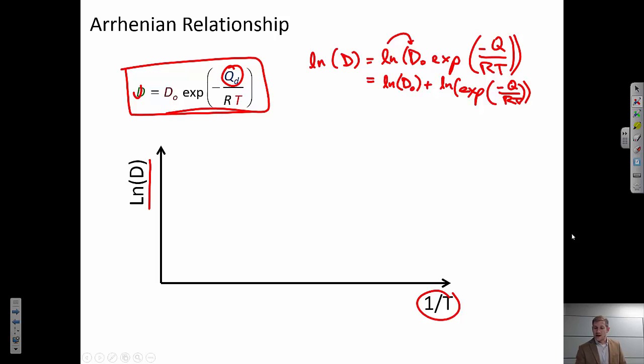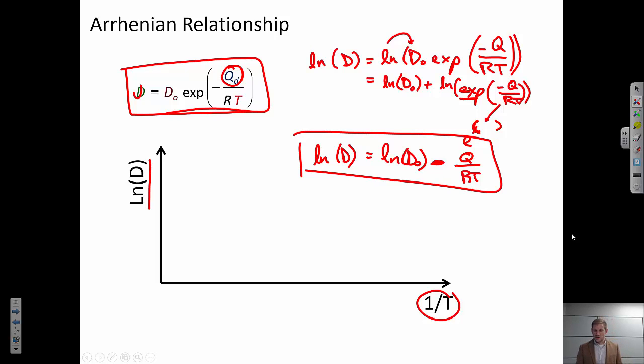If I'm taking the log of an exponential, so this exp is shorthand notation for e to the something power, right? So the natural log of the exponential of something simply equals the something. So if you're not familiar with this, go back and brush up on your exponential and log mathematical rules. But this results in the following relationship.